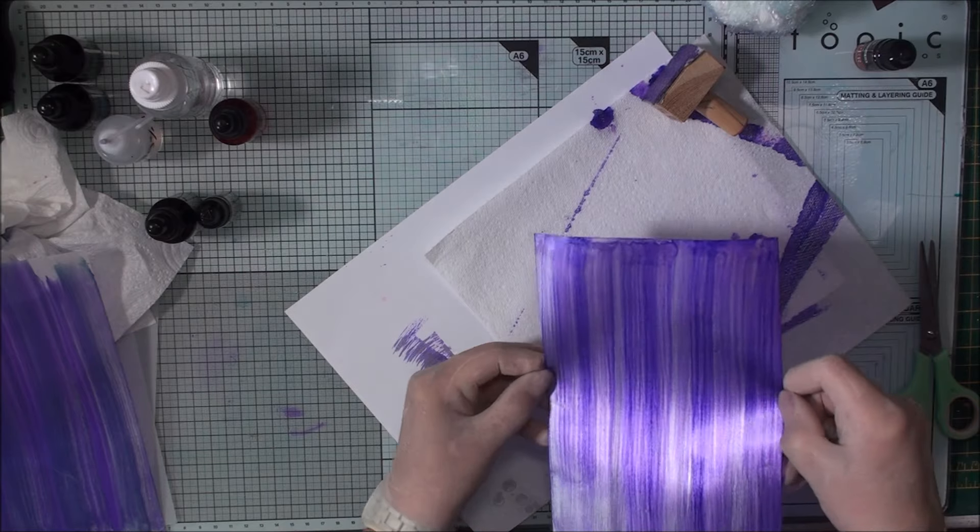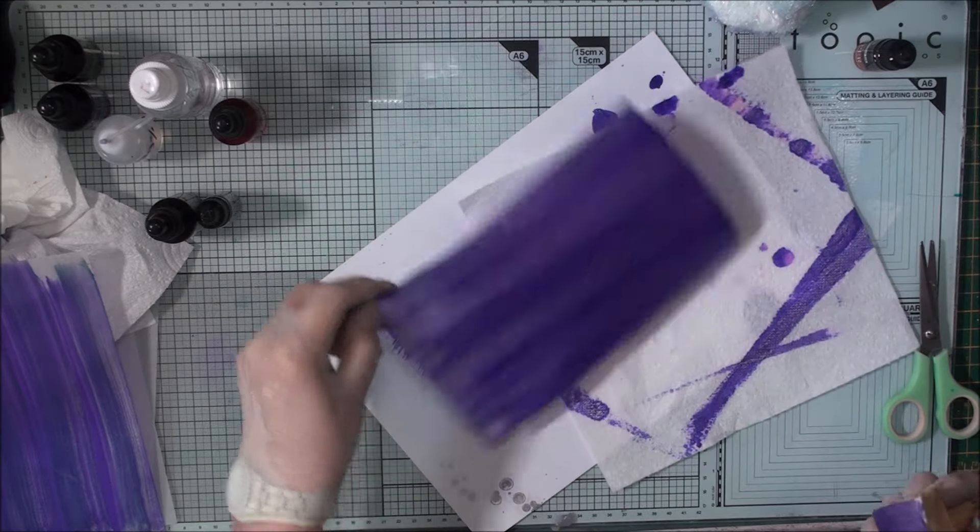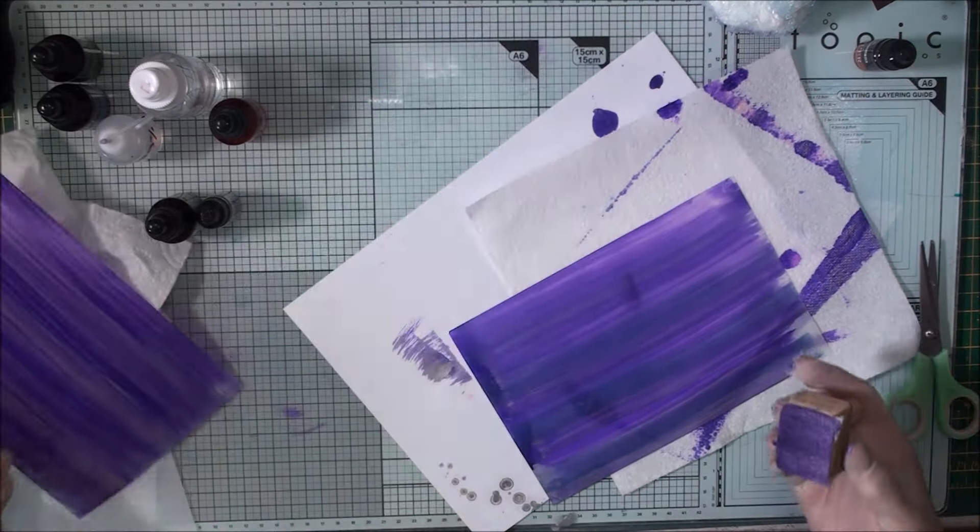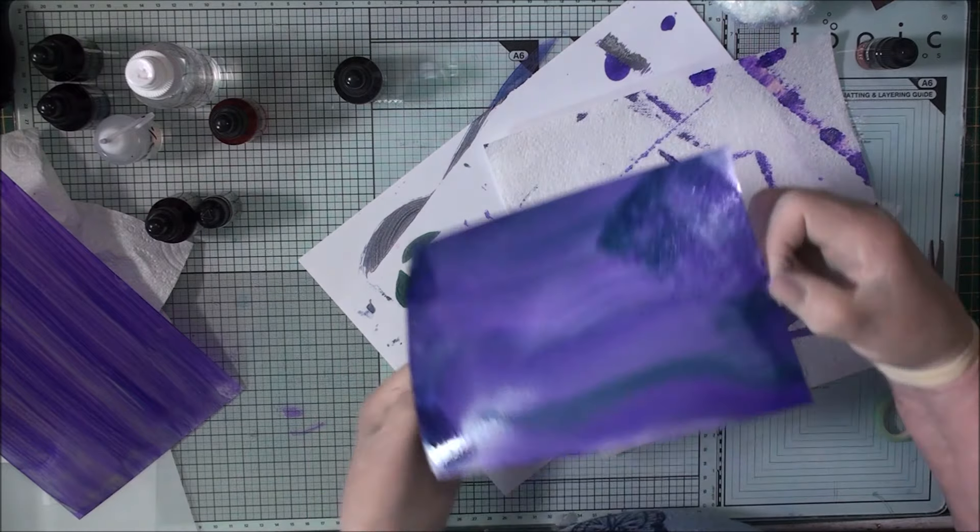So there's our piece. I've dried it off and that's the one with the lilac and the silver. The pink has almost disappeared in it but it doesn't matter. Now the thing with alcohol inks is if you don't like what you've got, even after it's dried, you can still come back in and change it.